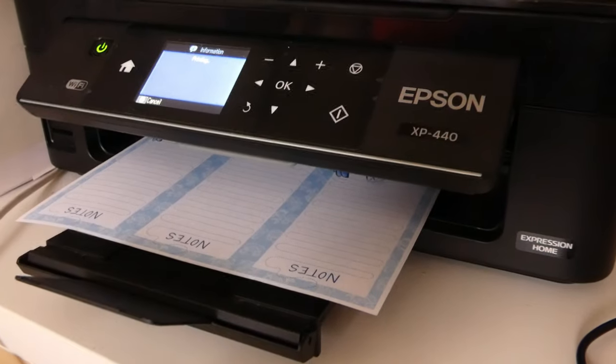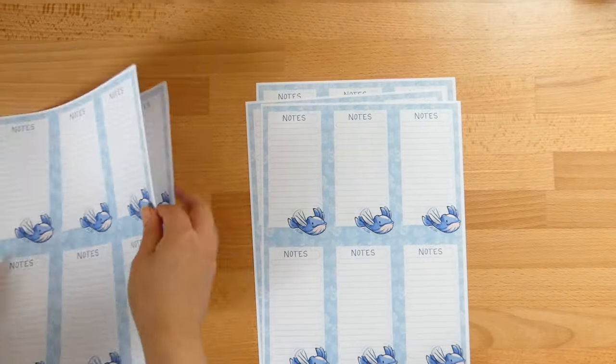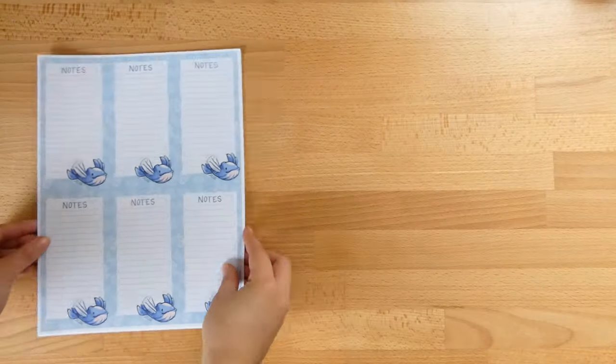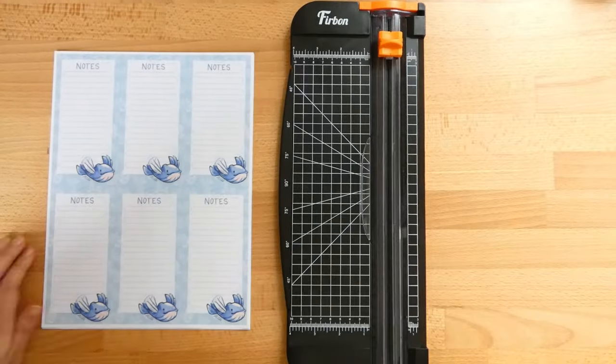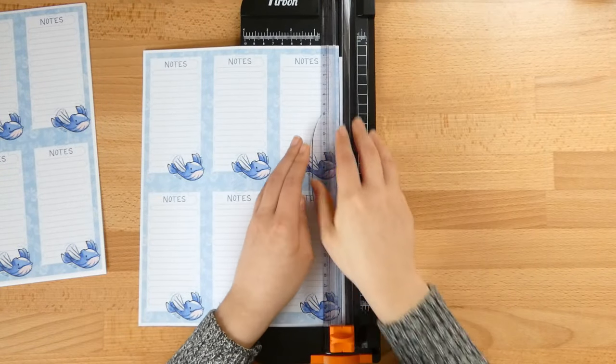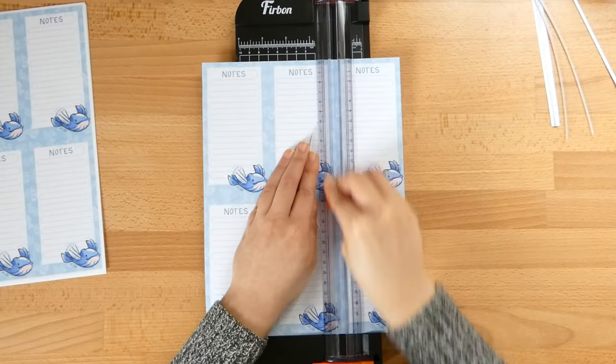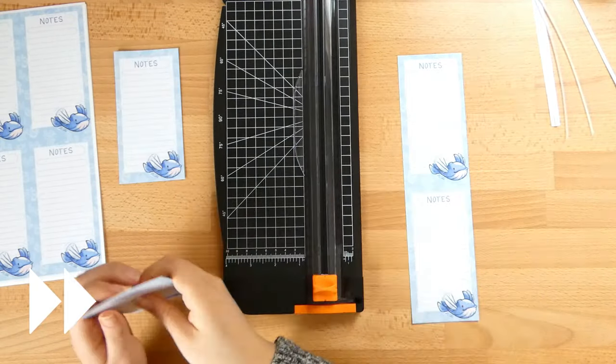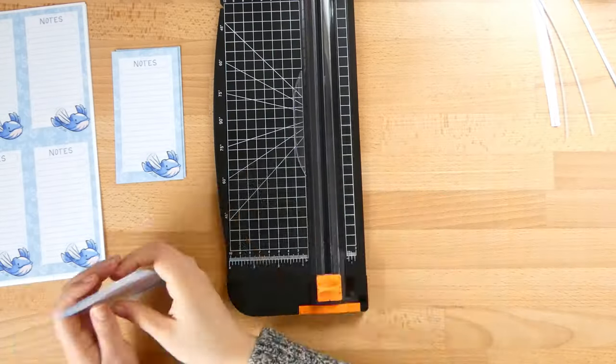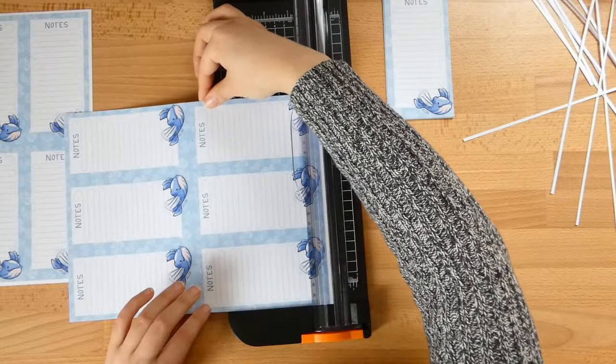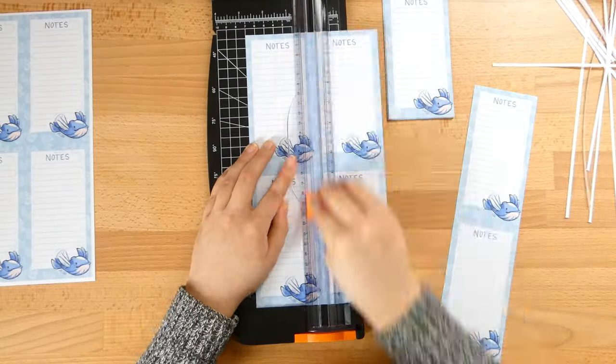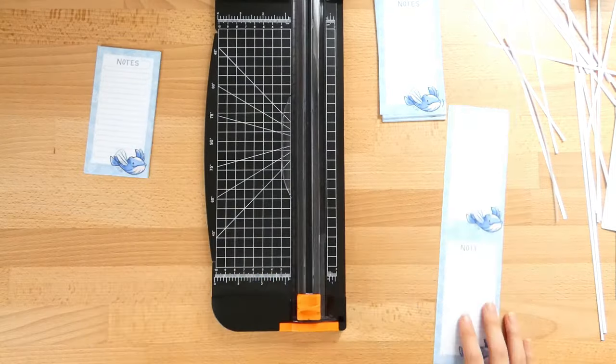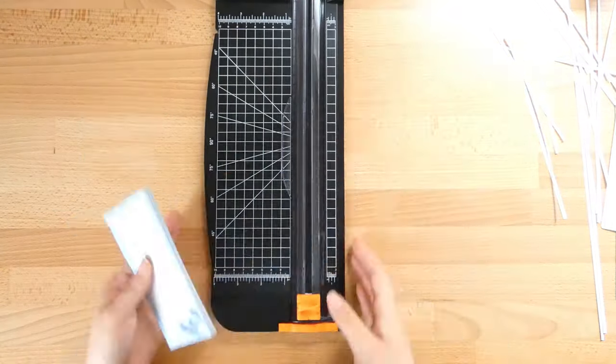Printing and cutting. Now for this slim whale fly notepad, I'm printing out a total of six sheets, which comes to a total of 30 notepad pages. And I'm using my paper cutter to trim them down.